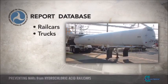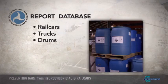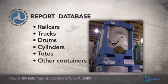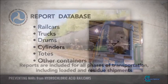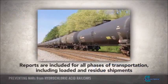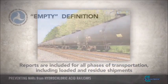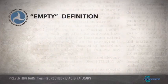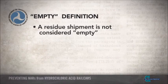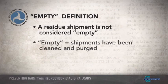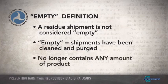The DOT database includes reports for all modes of transportation on all package types, including rail cars, trucks, drums, cylinders, totes, etc., and for all phases of transportation including loaded and residue shipments. It is important to note that according to the DOT definition, a residue shipment is not considered empty. Empty only refers to containers which have been cleaned and purged and no longer contain any amount of product.